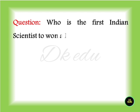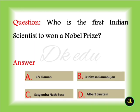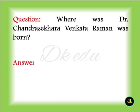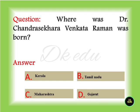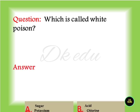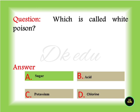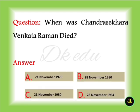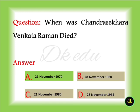Who is the first Indian scientist to win a Nobel Prize? C.V. Raman. Where was Dr. Chandrasekhar Venkata Raman born? Tamil Nadu. Which is called White Poison? Sugar. When did Chandrasekhar Venkata Raman die? 21st November 1970.